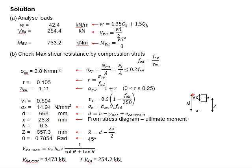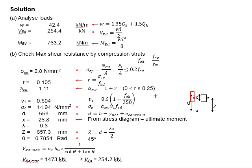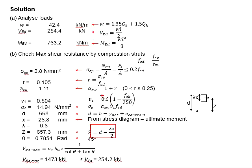Next, you need to determine the height of the stress block under the ultimate moment. From the previous example, we know that the neutral axis X is equal to 26.8 mm. There is a lambda here, which is to be multiplied with the neutral axis, and lambda will be equal to 0.8 for concrete strength less than 50. Substituting the values into the equation, Z is obtained as 657.3 mm.